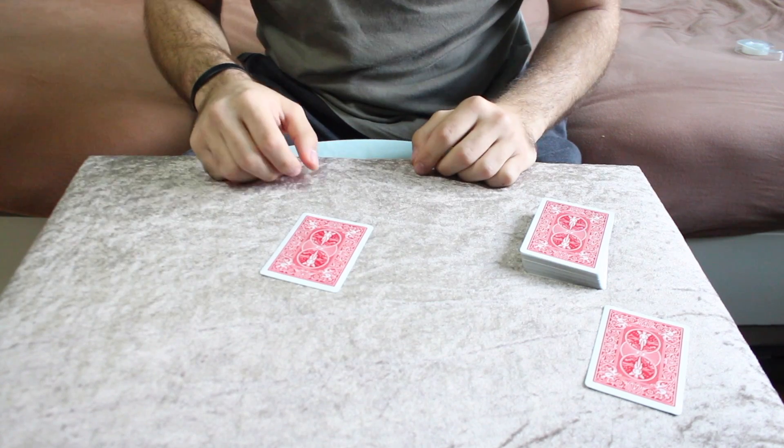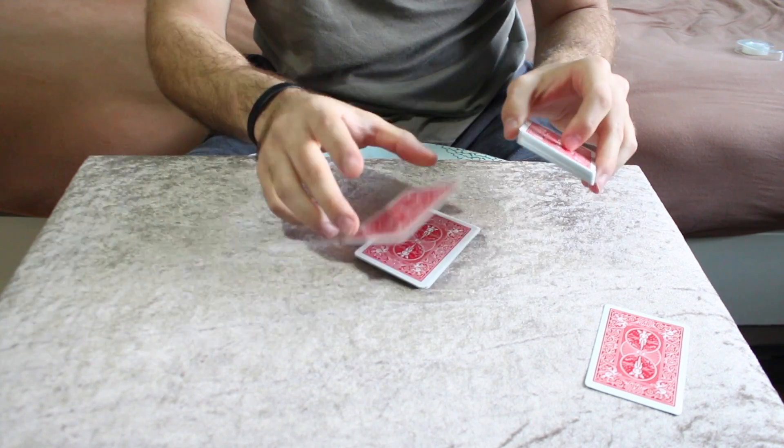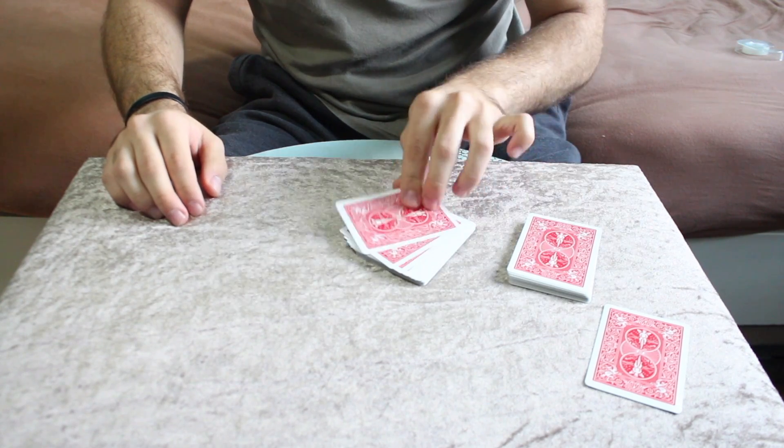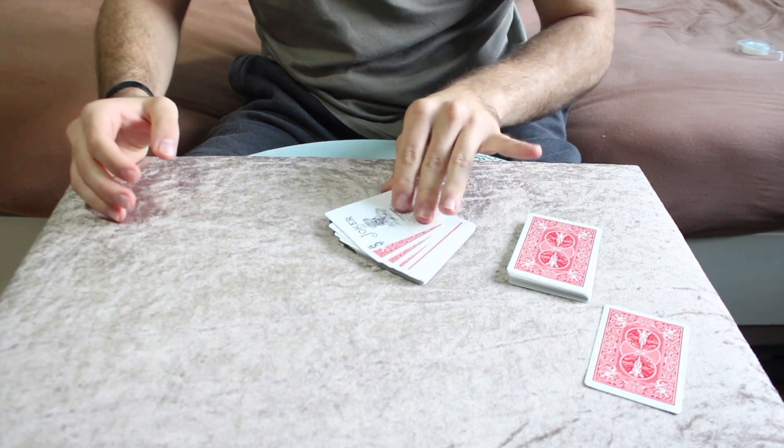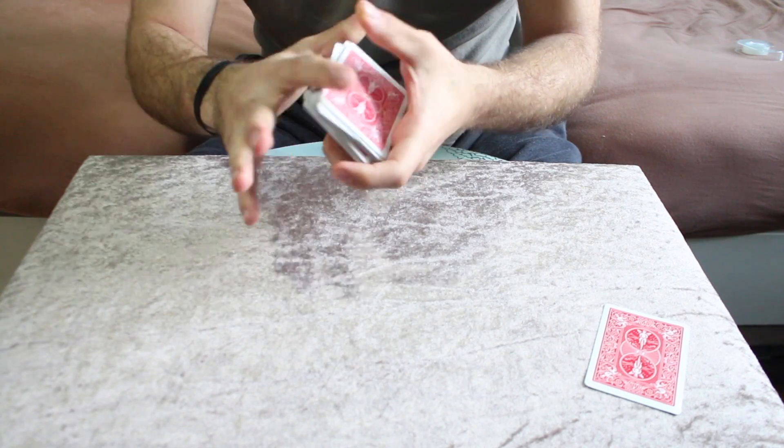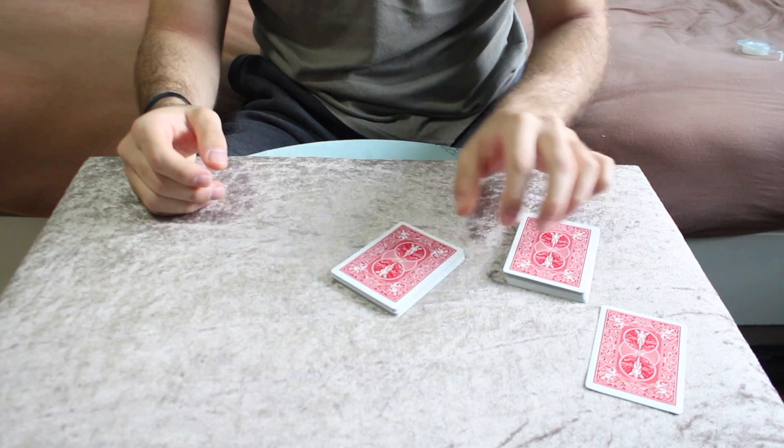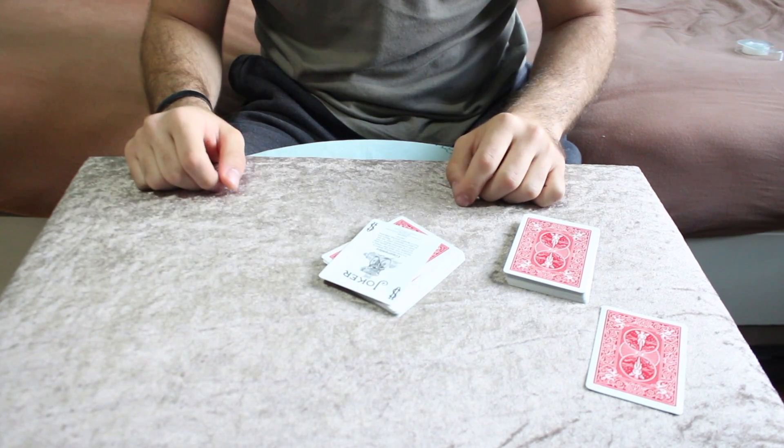Now what this does is this. When you place now this card in the center of the pack, you are able to cut to it, even though you don't know its exact position. So you can shuffle the cards, but somehow you are able to cut to that breather crimp card.